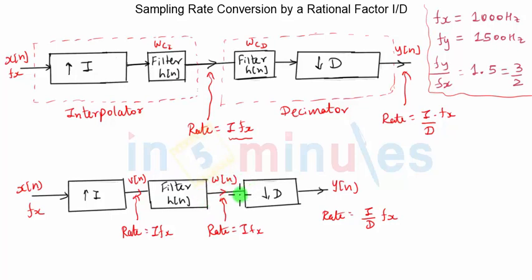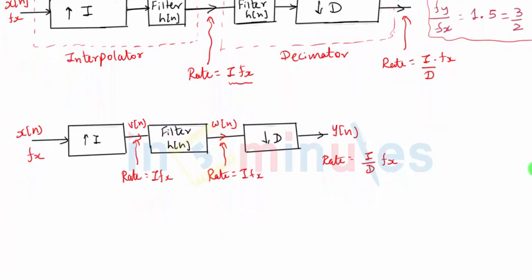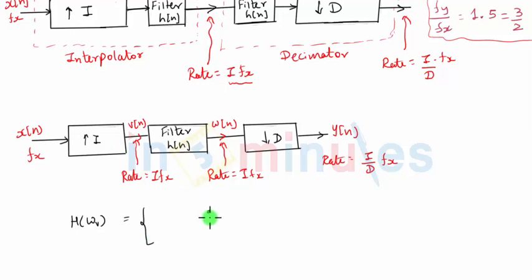The filter also ensures the signal has a bandwidth between −π/D and +π/D so that it does not cause aliasing during the decimation process. The output of the filter w(n) is given to a decimator and the final output is y(n). The frequency response of the combined filter must incorporate filtering for both interpolation and decimation. We write the frequency response H(ω) with respect to rate I·fx — it is a low-pass filter.